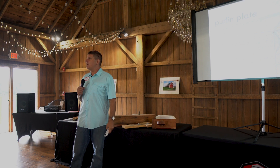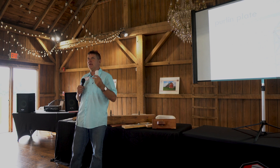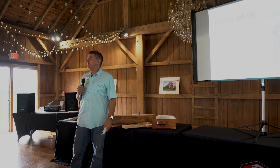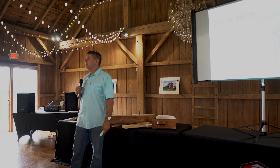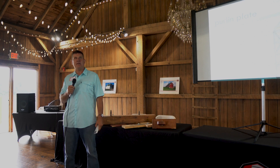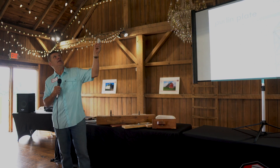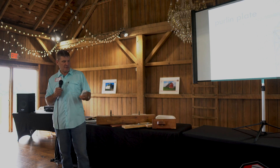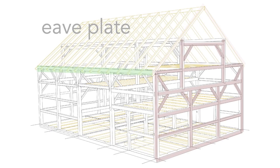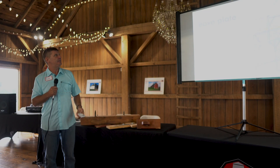In a round barn we tend to call those mid-span plates. In a multi-tiered round barn you might have lower, middle, and upper mid-span plates, but they're still essentially in the same place as a purlin plate, which is the upper plate in a building that divides the rafters. We have the eave plate, sometimes called the rafter plate, along the eave line of the building that the rafters set on.